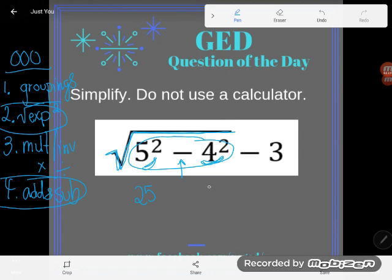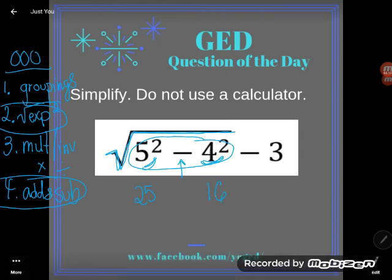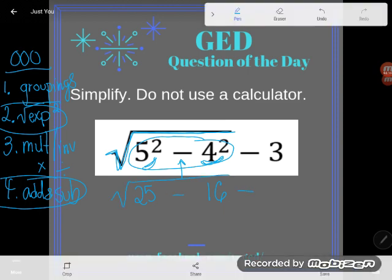And then four squared is the same as four times four or 16. And now I'll drop down the subtraction. I haven't used it yet. The square root, I haven't used that yet. And the minus three.